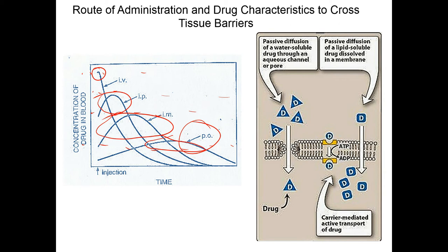These drugs want to be water-soluble so they can pass through channel proteins like aquaporins and get through the membrane. Some drugs are lipid-soluble and can pass right through the cell membrane itself. Other drugs require active transport — some type of carrier molecule — to pump the drug past tissue barriers. The chemical properties of a drug will affect how well it crosses membranes, whether those are membranes of our cells, or bacterial, fungal, or protozoal cells.